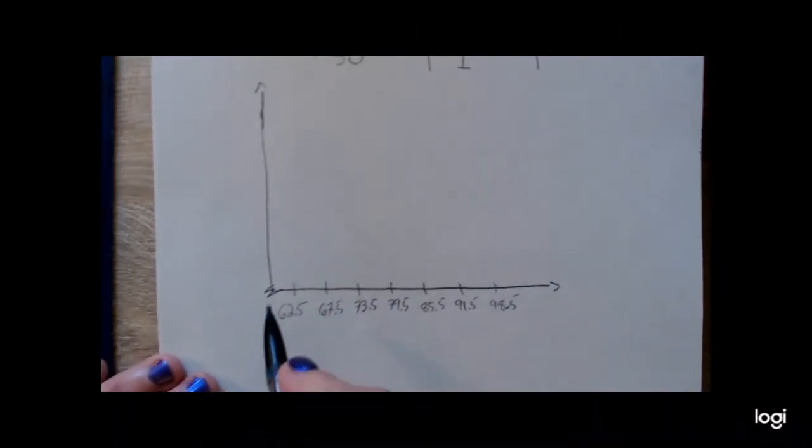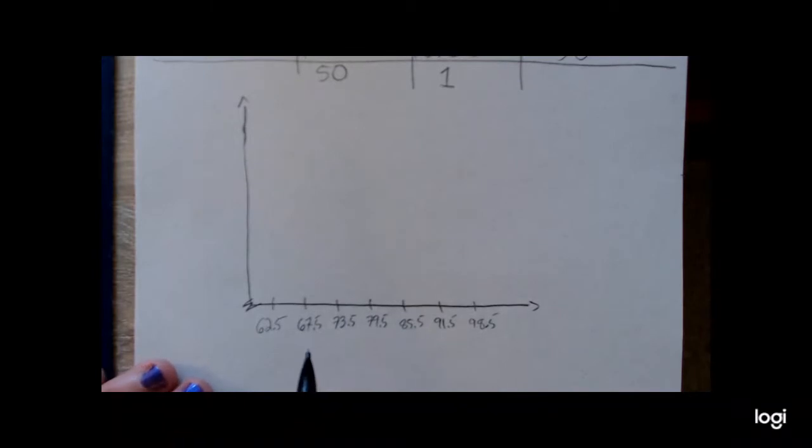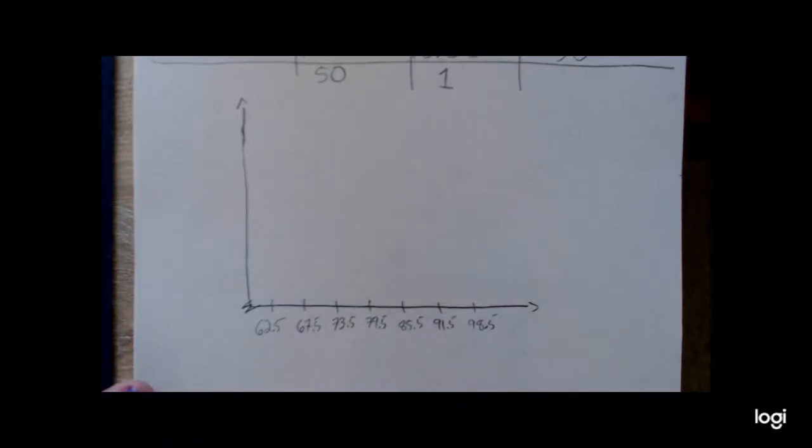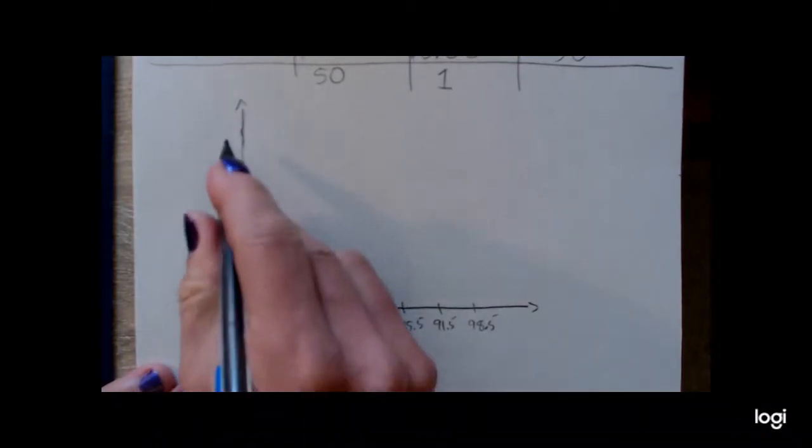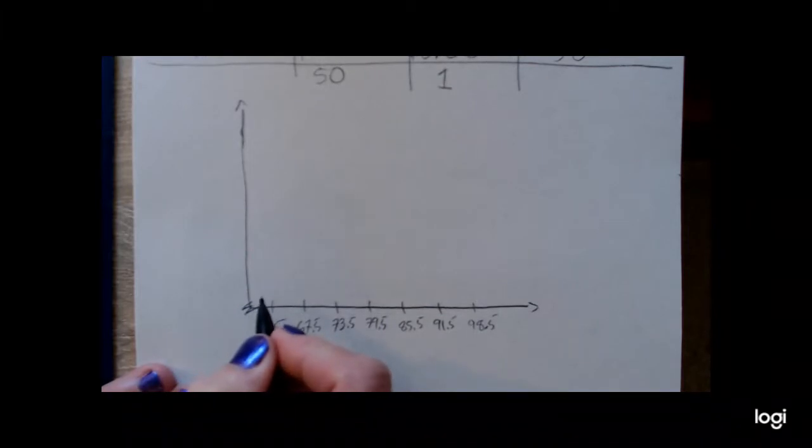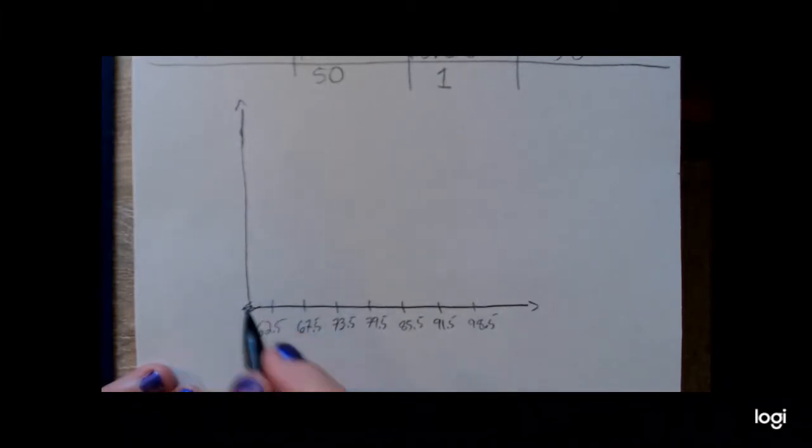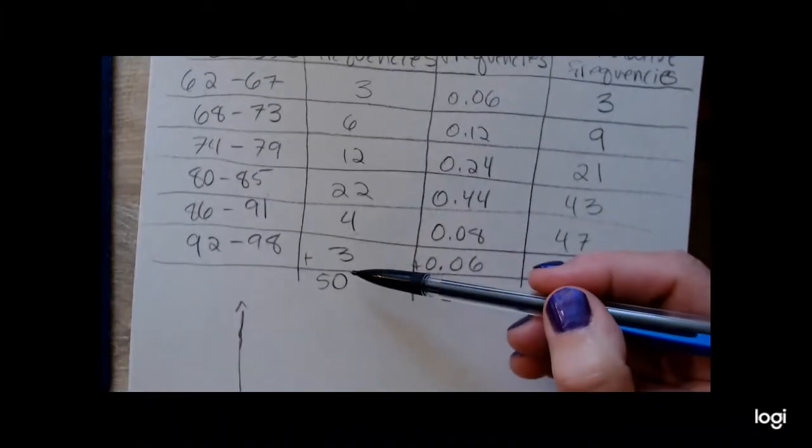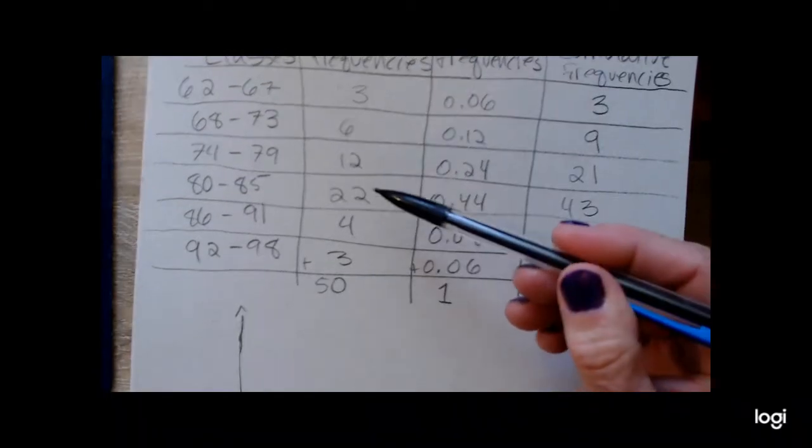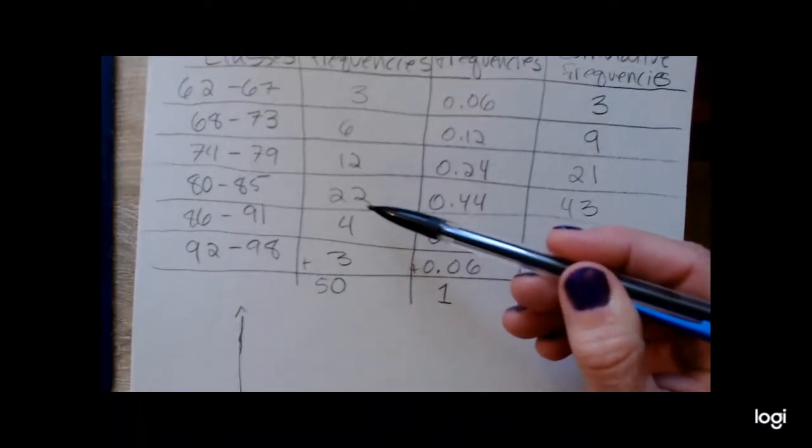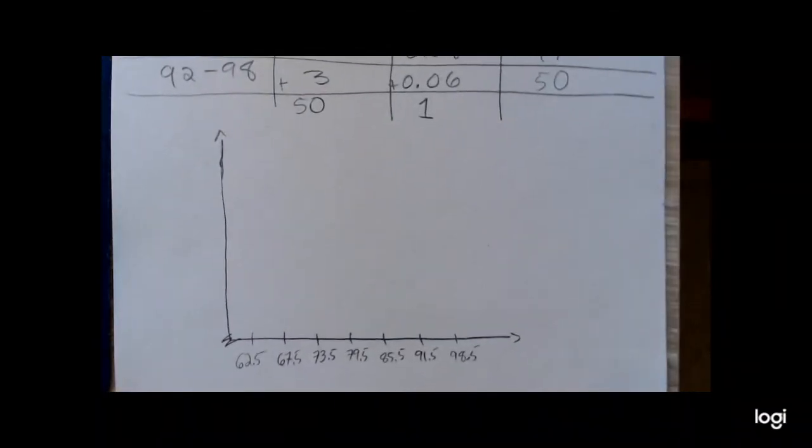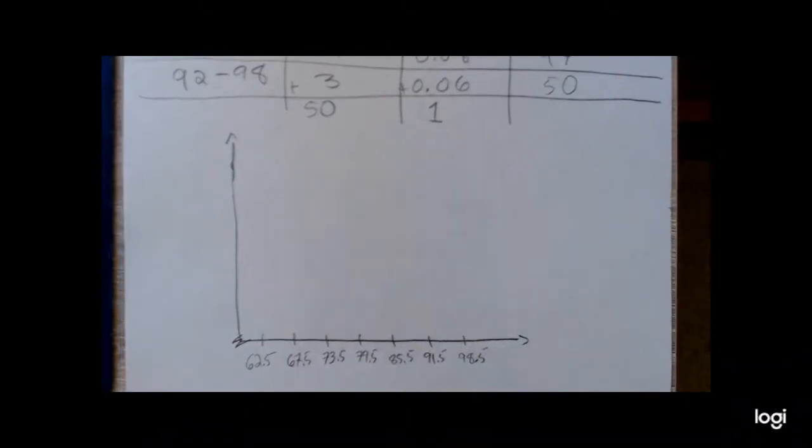And then for my vertical axis, I can just go ahead and do the tick marks in twos. My lowest number of frequencies is 3, my largest number of frequencies is 22. I could do fives, the tick marks in fives. Okay, it's up to you. All right, so I've got 2, 4, 6, 8, 10.